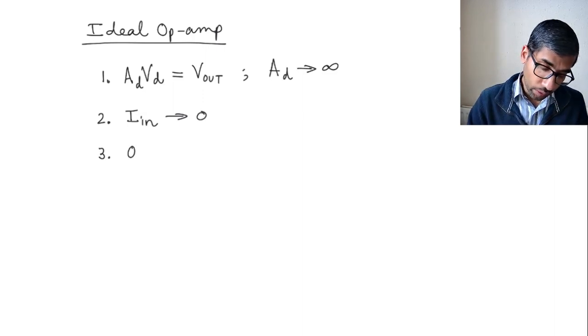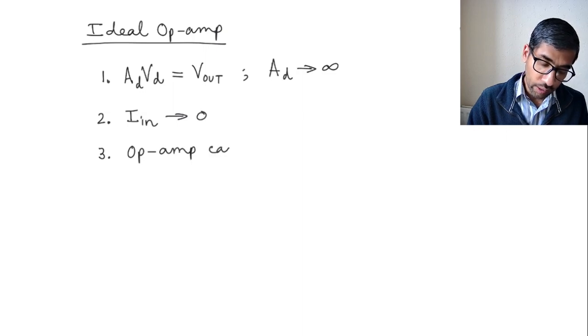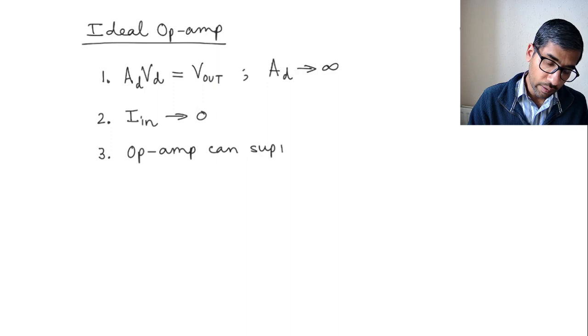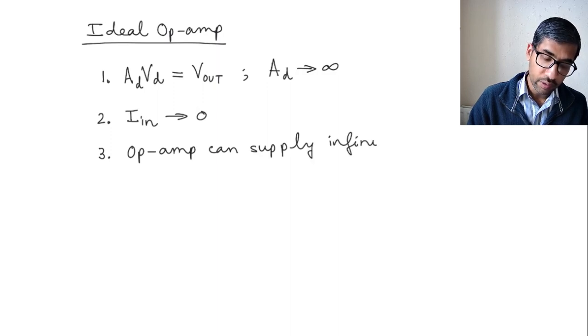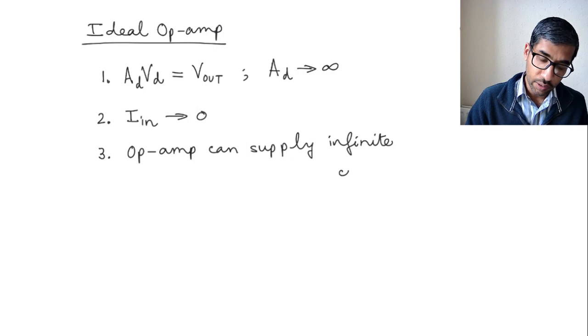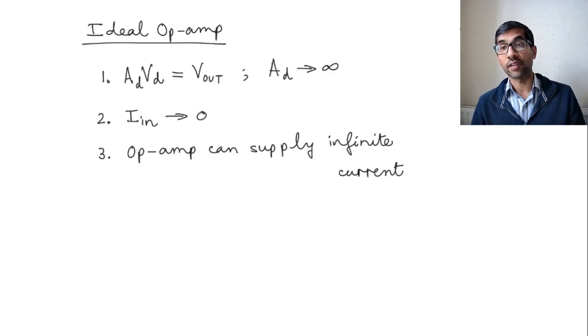We said the op-amp cannot be loaded, or we can write that the op-amp can supply infinite current. It doesn't always supply infinite current, but if required by the output circuit, it would provide infinite current and that would not be a problem.